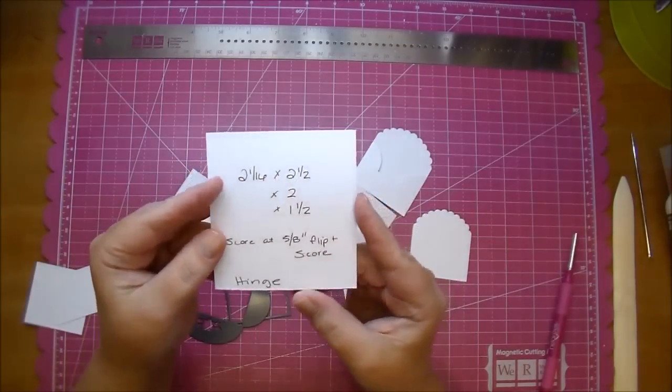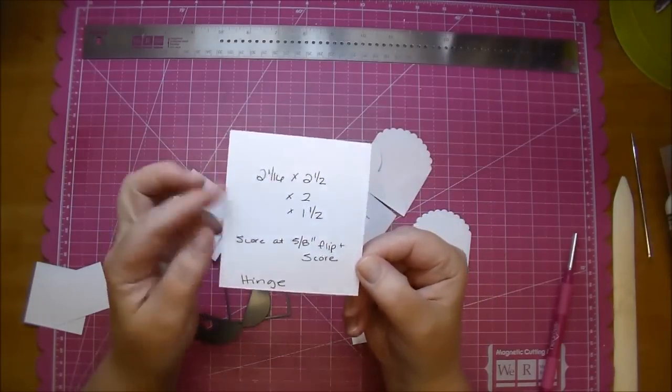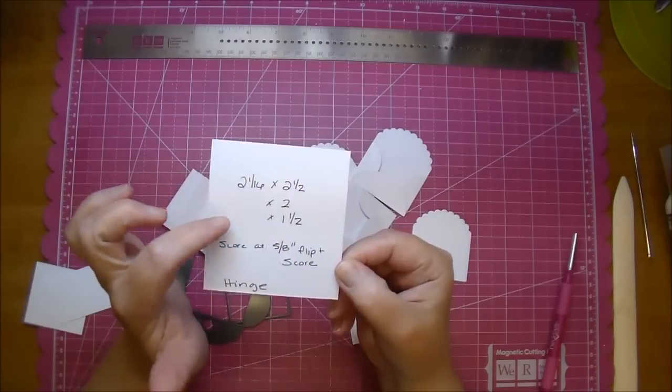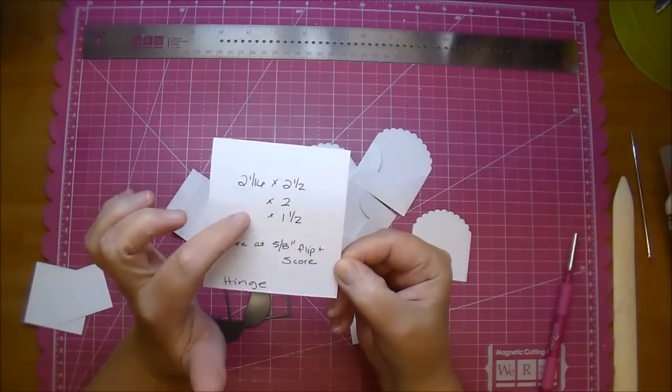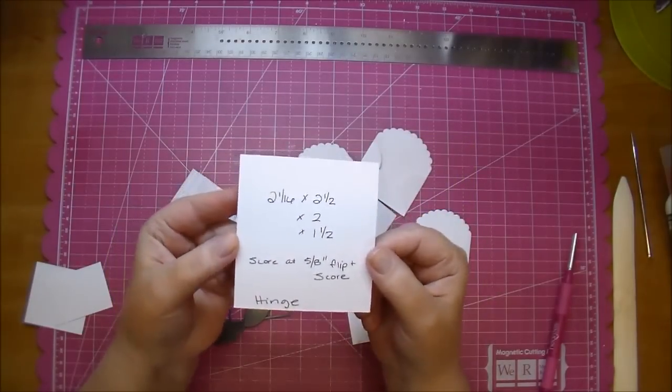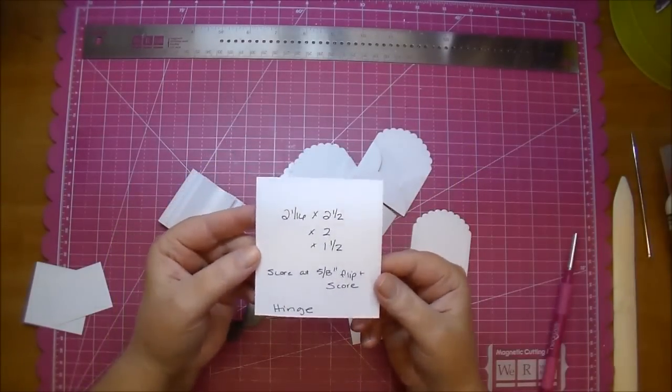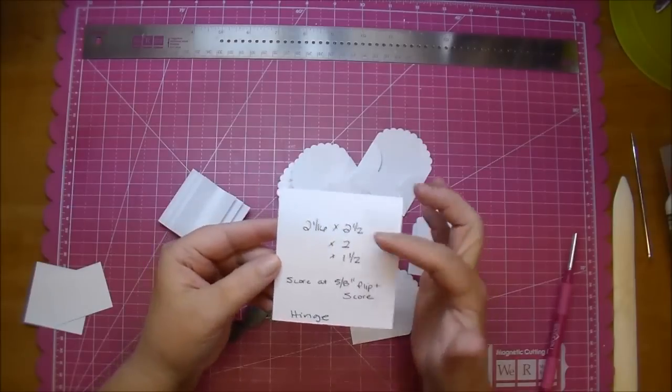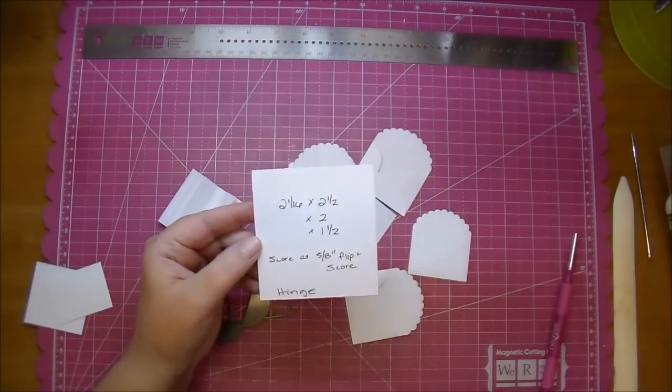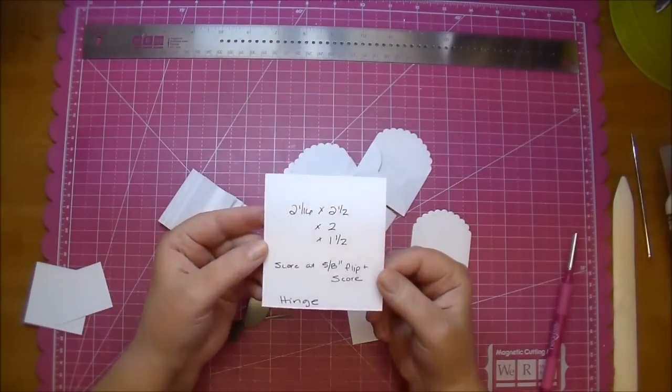So I cut three pieces. One of them at two and one sixteenth by two and a half. Another piece at two and one sixteenth by two, and a third piece at two and one sixteenth by one and a half. I just dropped the measurements one half inch increments each time. So you can make as many as you want. You can make the book as large as you want. Just keep dropping them by one and a half. Or I guess I should say you want to go up by one and a half if you want a larger book.